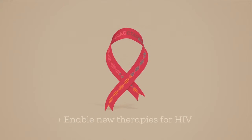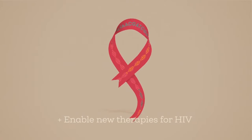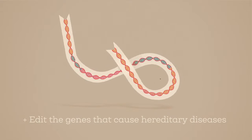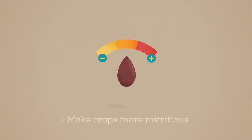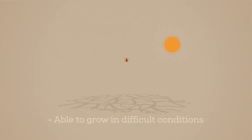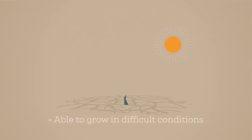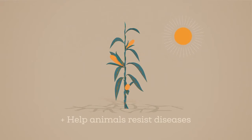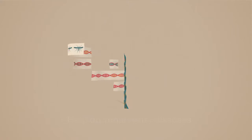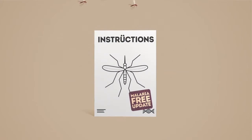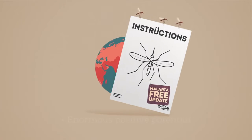We may also enable new therapies for HIV, or edit the genes that cause hereditary diseases. In the plant world, it could make crops more nutritious, disease resistant, and able to grow in difficult conditions. By editing animals' genes we could help them resist diseases. Scientists are currently working to edit the genes of mosquitoes to prevent them from carrying malaria.